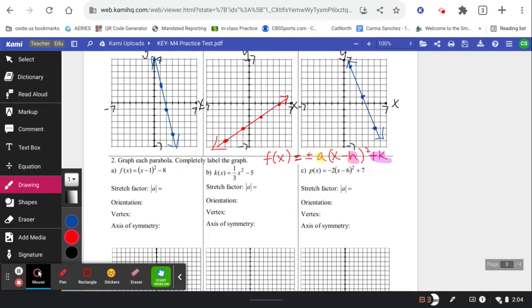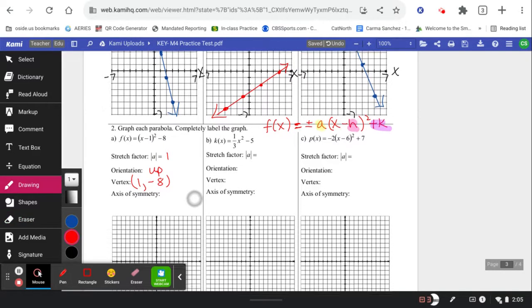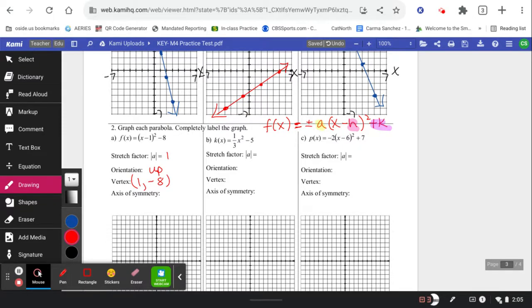My stretch factor of this one, it looks like there is nothing in front of the parentheses, so it's just a stretch factor of 1 with an orientation of positive up. And my vertex follows the same behavior as pulling it out of point-slope form. This is going to be at a positive 1, negative 8. Why is it positive 1? Because of the minus in the formula, making it the opposite sign of the x value. Y value stays the same. Axis of symmetry is going to go straight down that vertex at x equals 1.